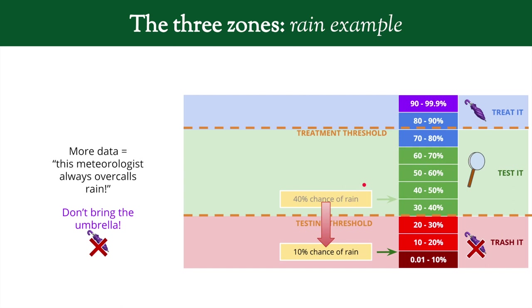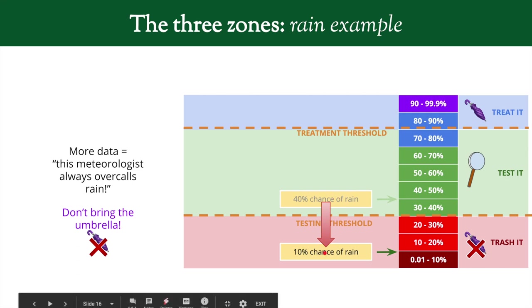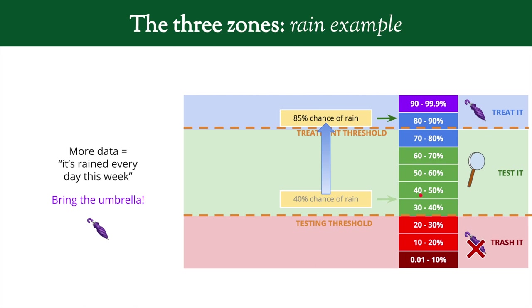Maybe we collect more data: the meteorologist always over-calls rain and is never right whenever they say it's going to rain. That additional information pushes the probability down below 10%, so you leave the umbrella at home. Or perhaps it's rained every day this week — even though there's only a 40% chance today, you think the probability is actually much higher and bring the umbrella.